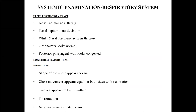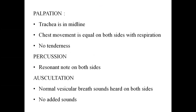Systemic examination, starting with respiratory system as the child presented with cough and cold. Upper respiratory tract: no alar flaring, nasal septum no deviation, white nasal discharge seen, oropharynx looks normal, posterior pharyngeal wall congested. Lower respiratory tract inspection: shape of chest normal, chest movement equal on both sides, trachea appears midline, no retractions, no scars, sinuses, or dilated veins.